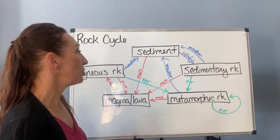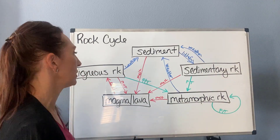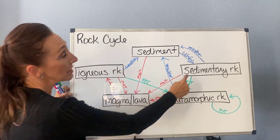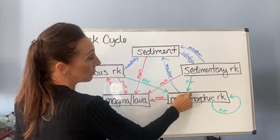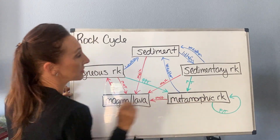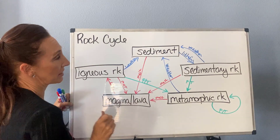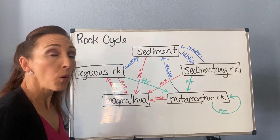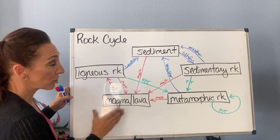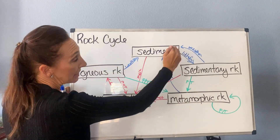There are two ways to think about this cycle: what can you do to something, or how do you generate something. For igneous rock, you can weather it, metamorphose it, or melt it. Same for sedimentary and metamorphic rock. Magma and lava you just cool, and sediment you can melt or lithify. For an igneous rock, there's only one way to generate it — you cool magma or lava.